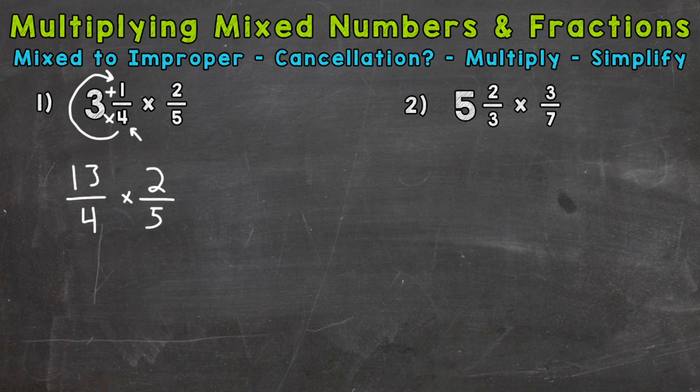So generally speaking, it makes the problem simpler to work through. And in the case of number one, we can use cancellation. So you need to look for common factors between the numerators and denominators. So four and two have a common factor of two, a greatest common factor of two. So let's divide four and two by two. Four divided by two is two. Two divided by two is one.